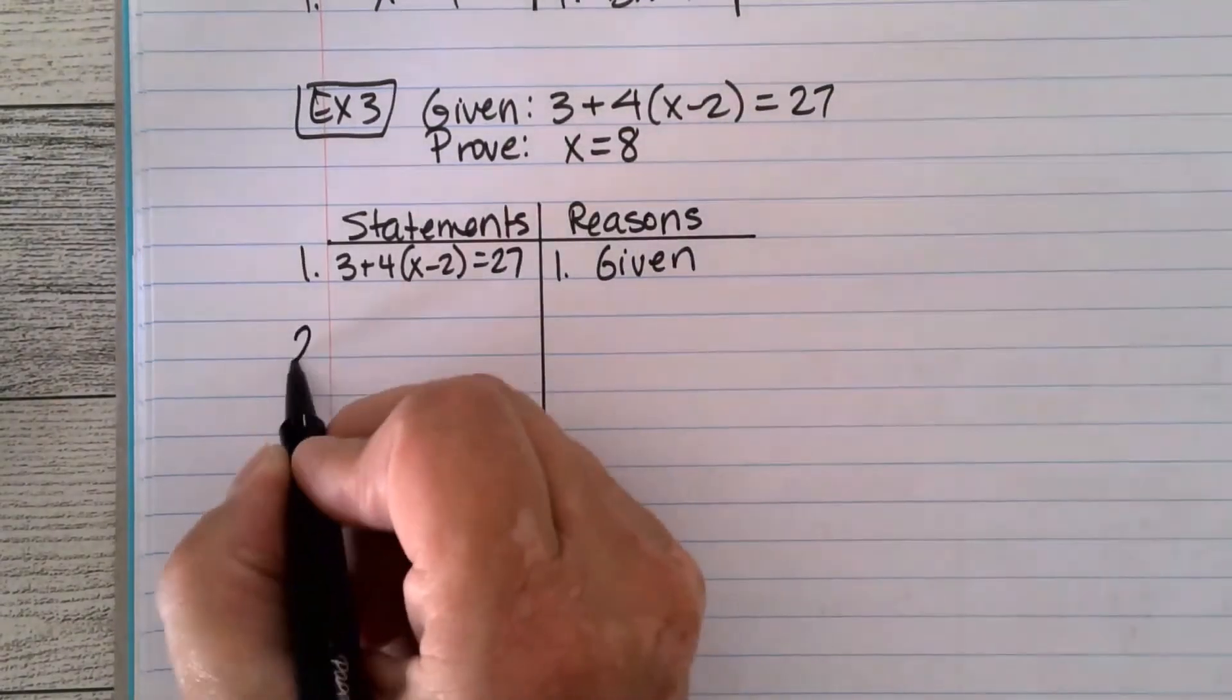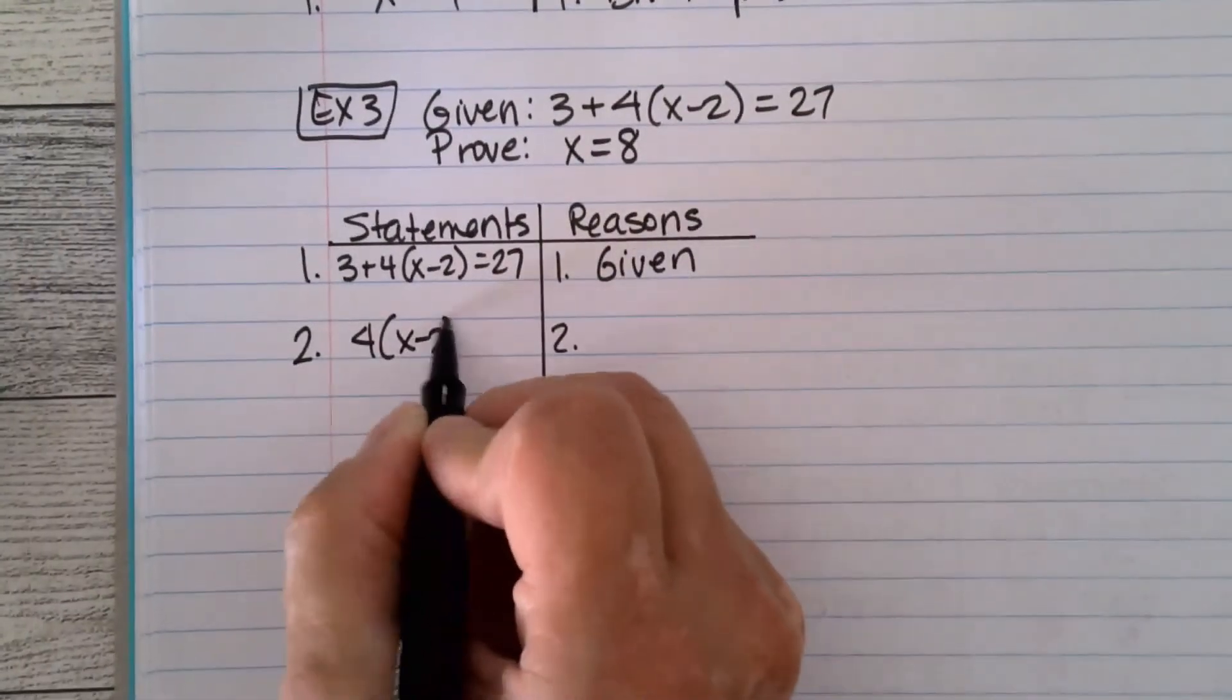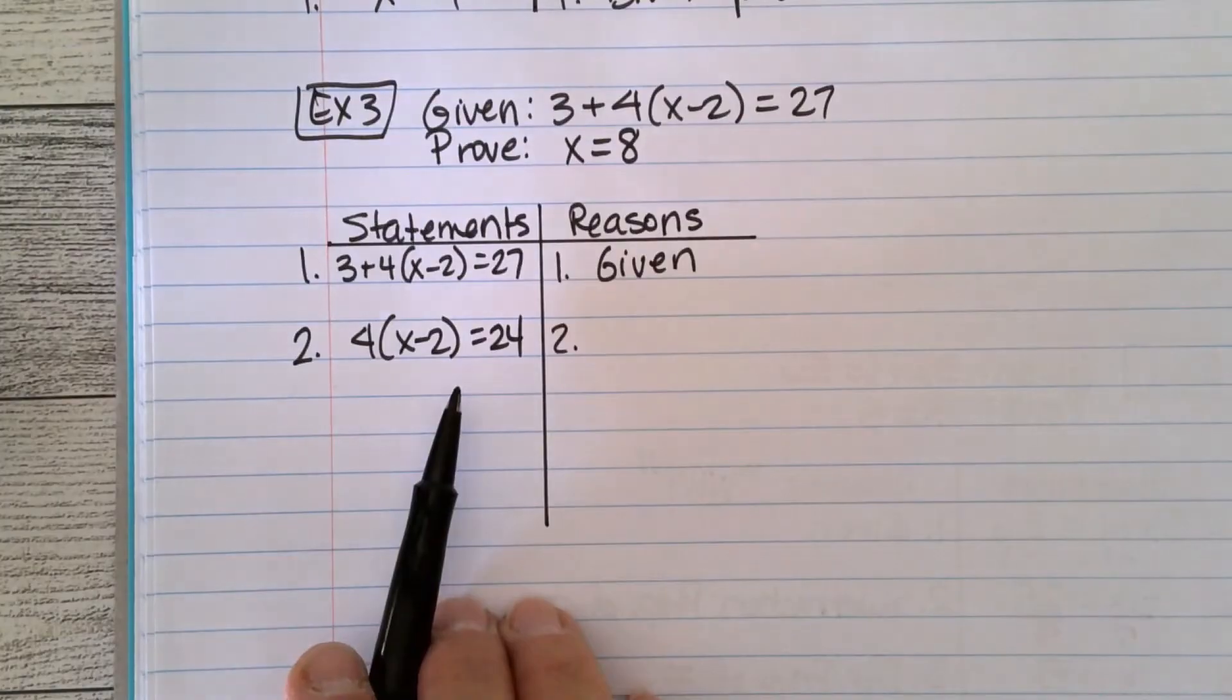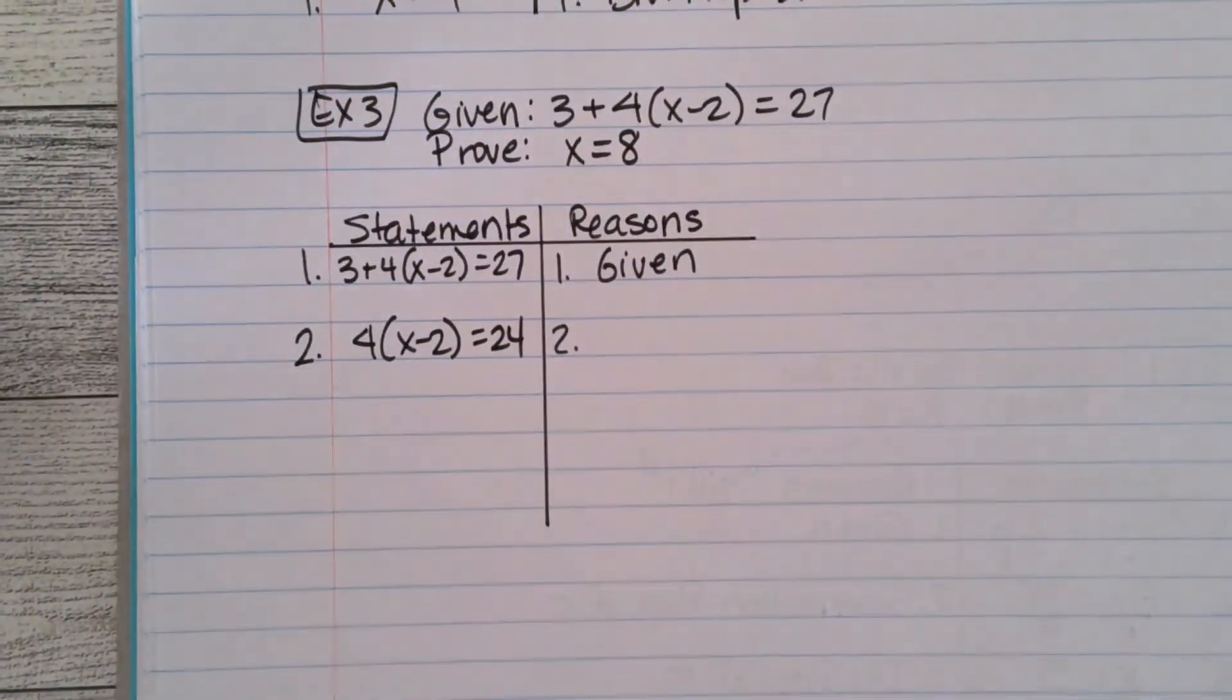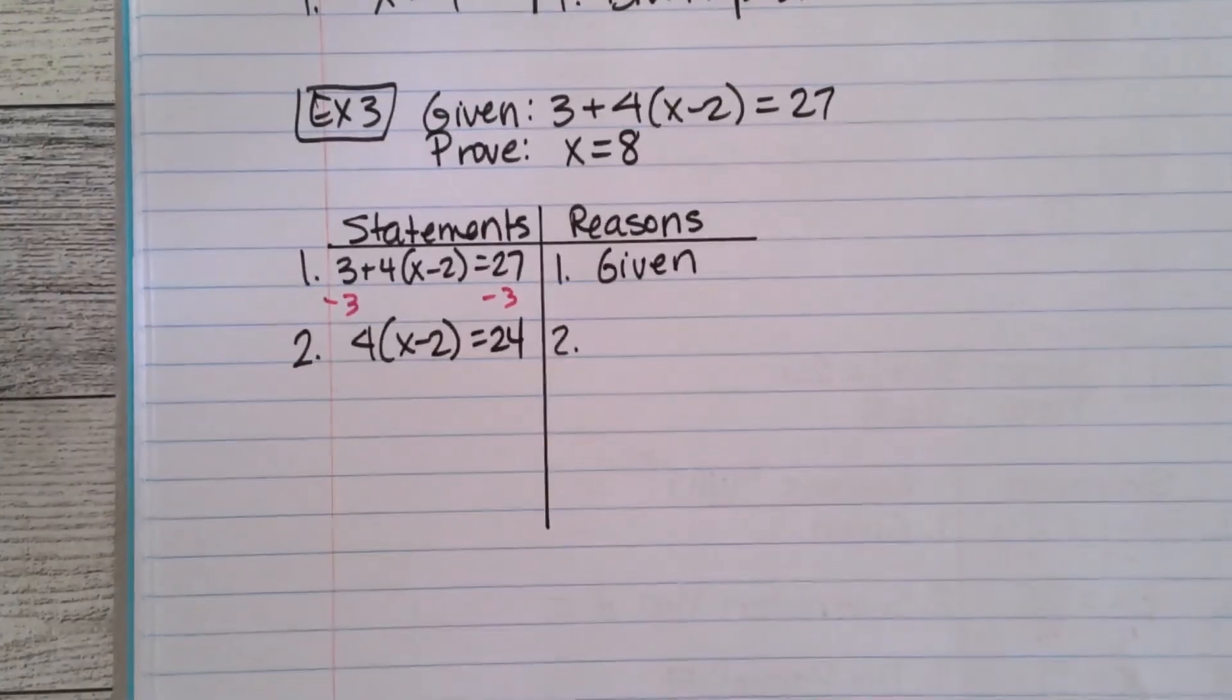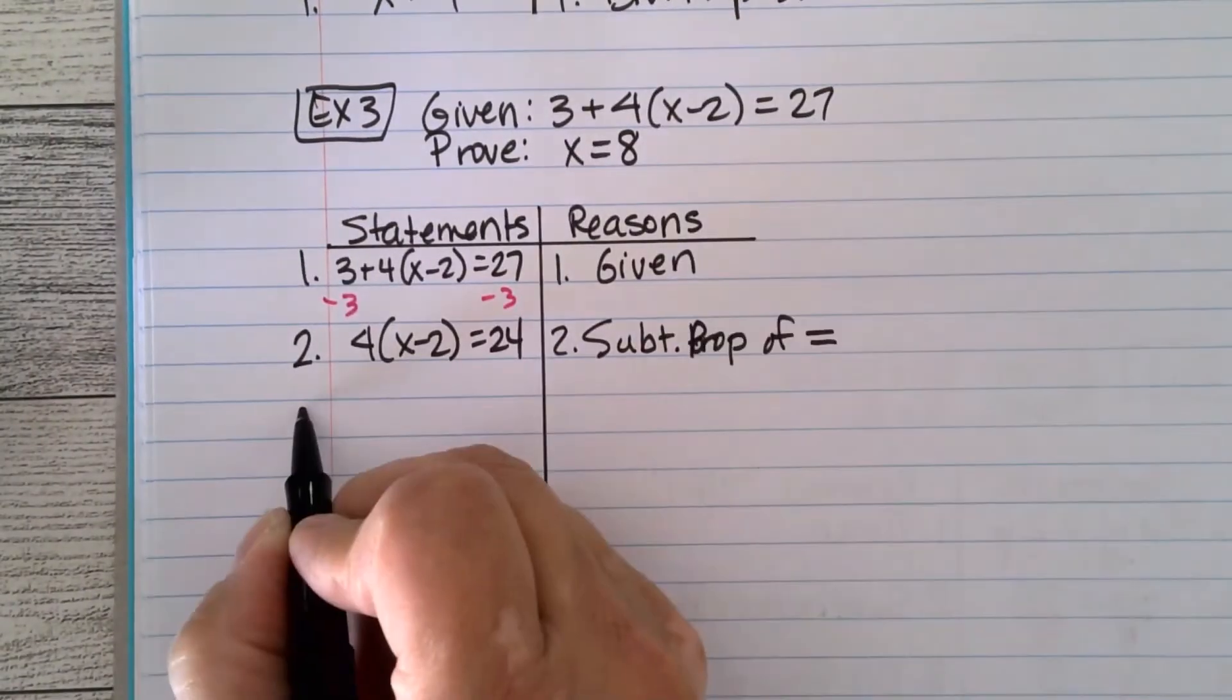All right, your first statement is always your given. All right, second statement I'm going to make. Again, I'm going to write the statement. You're going to figure out what I did. My second statement is 4(x - 2) = 24. I subtracted 3 from both sides, but I did it in my head. I'm not expecting everyone to do it in their head. But if you can do it in your head, this is how you can solve equations for me now. You can skip all these little steps where you write things underneath. I'm down with you guys not doing that anymore. This is the subtraction property, which we use a lot.